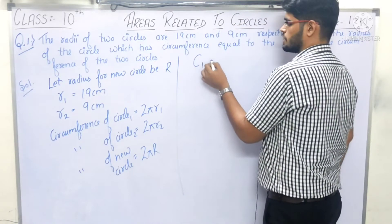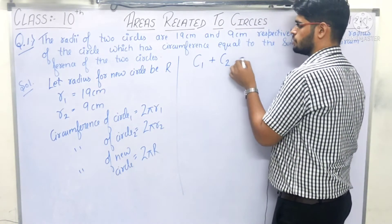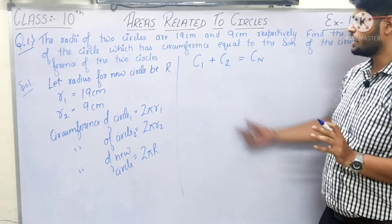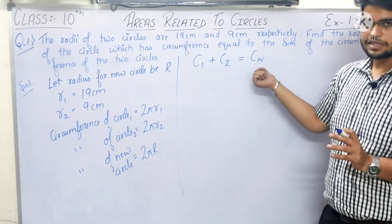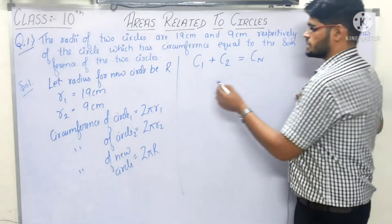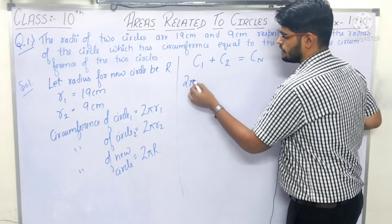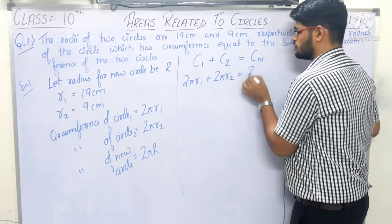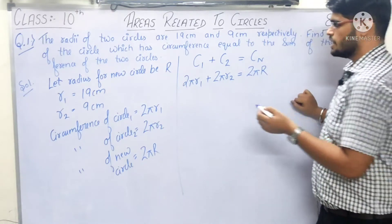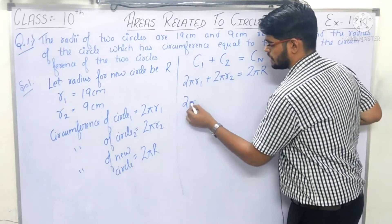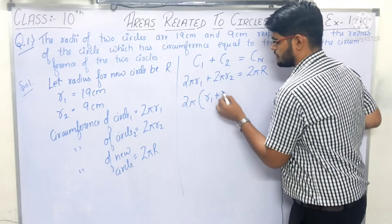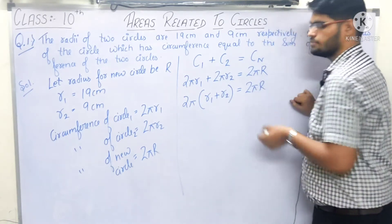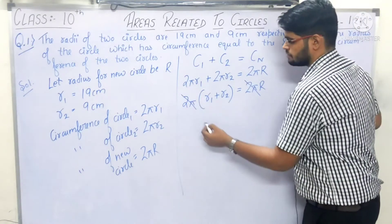The circumference of circle 1 plus the circumference of circle 2 is equal to the circumference of the new circle. So, 2πr1 + 2πr2 = 2πR. Taking 2π common, we get r1 + r2 = R.